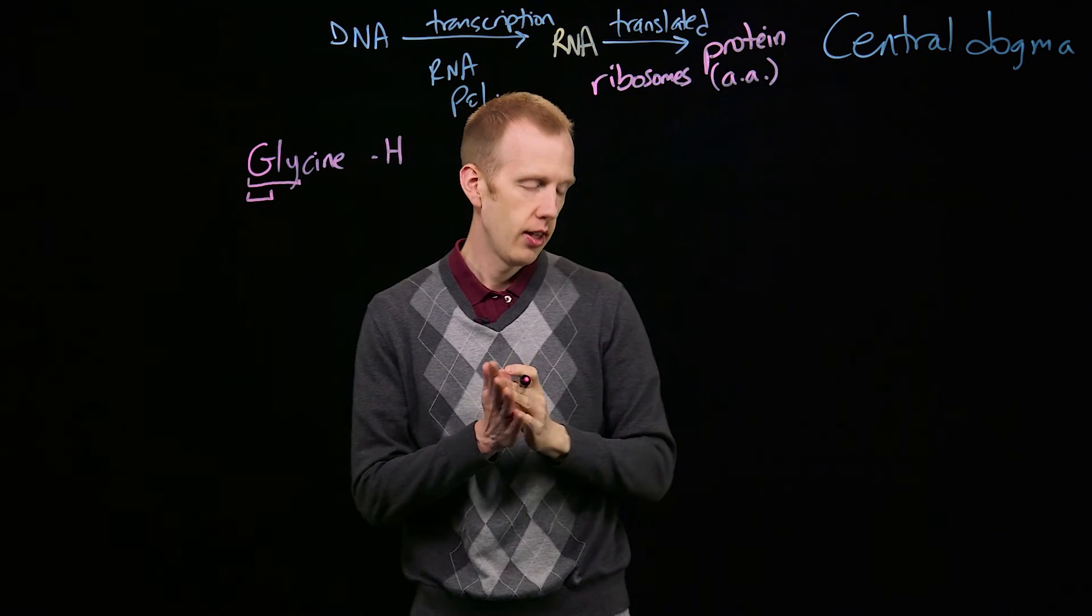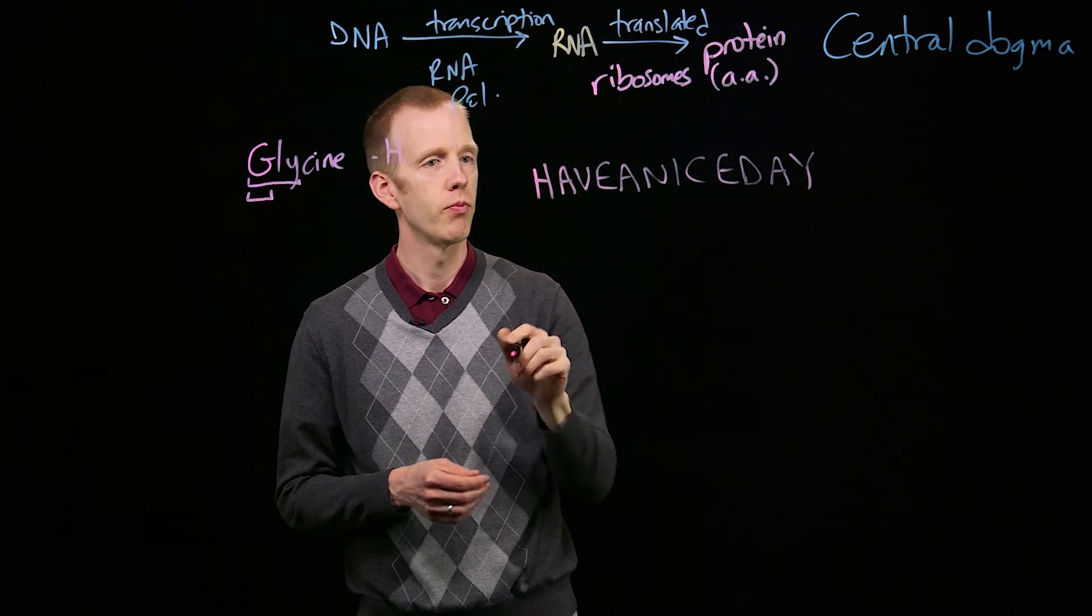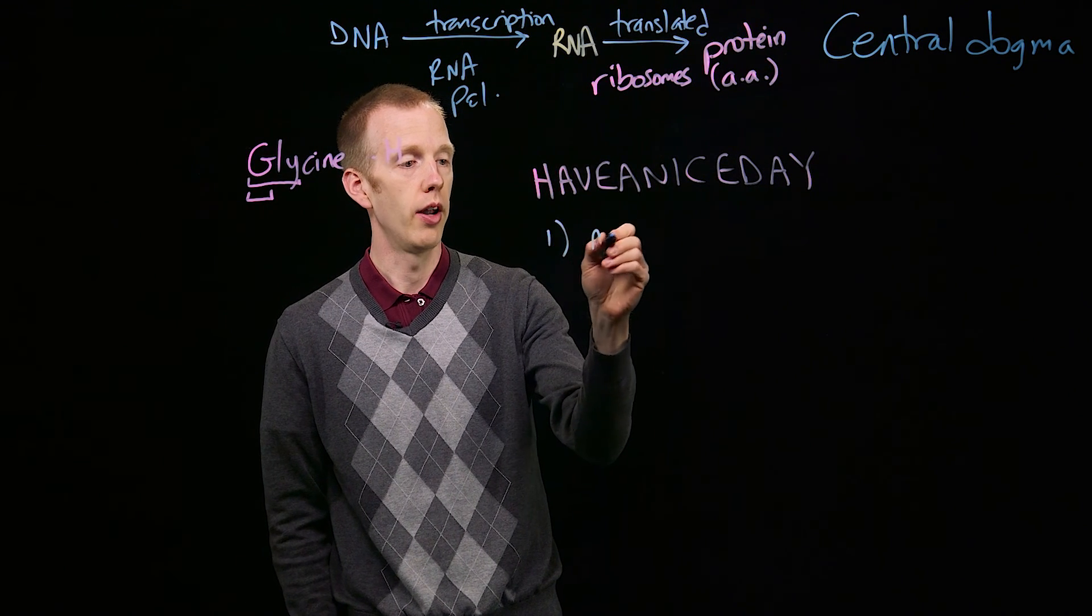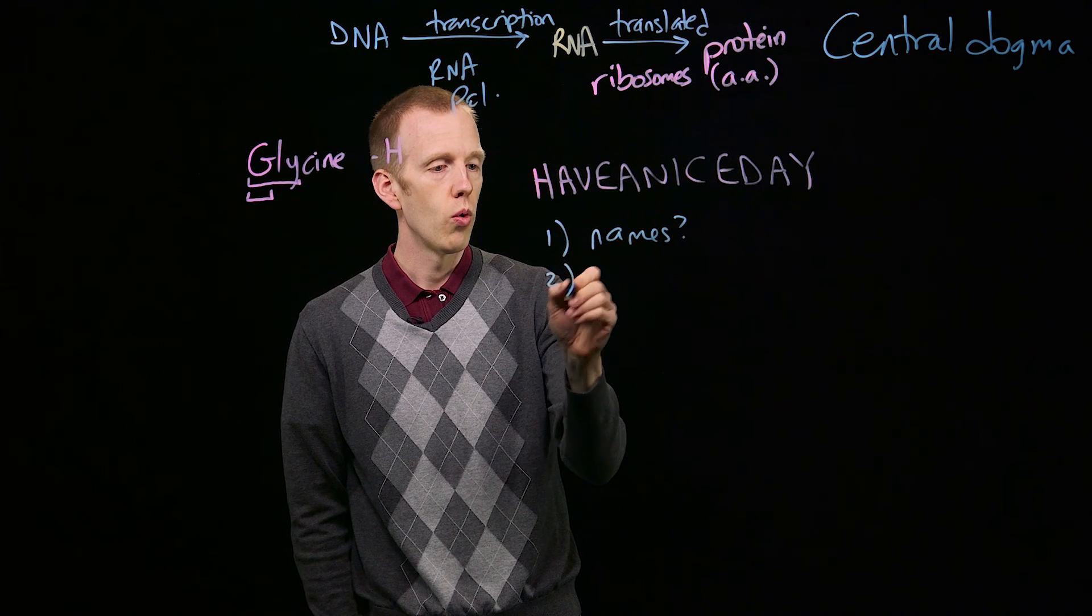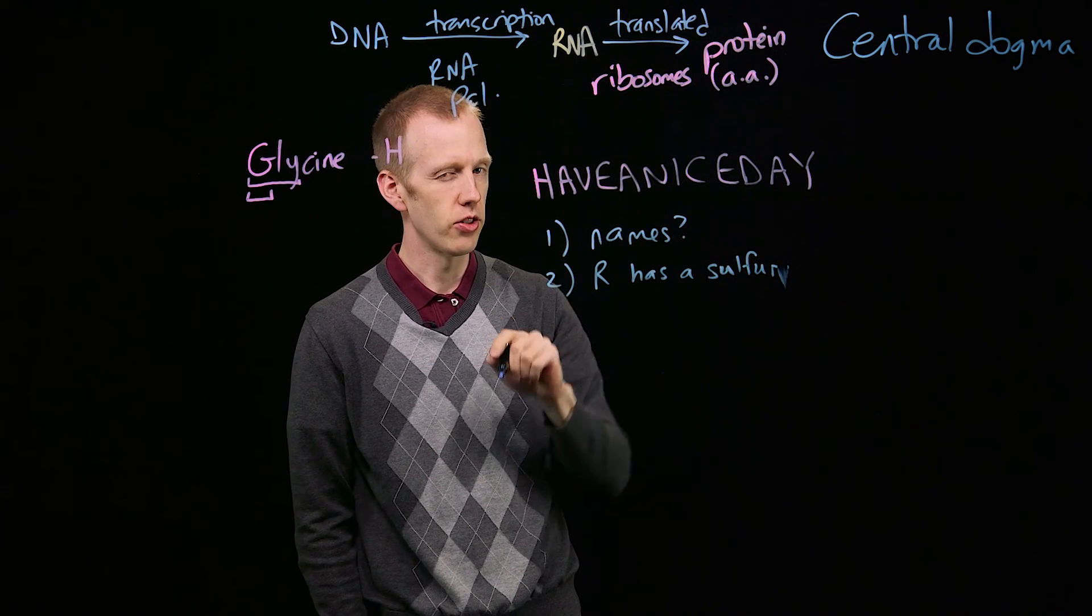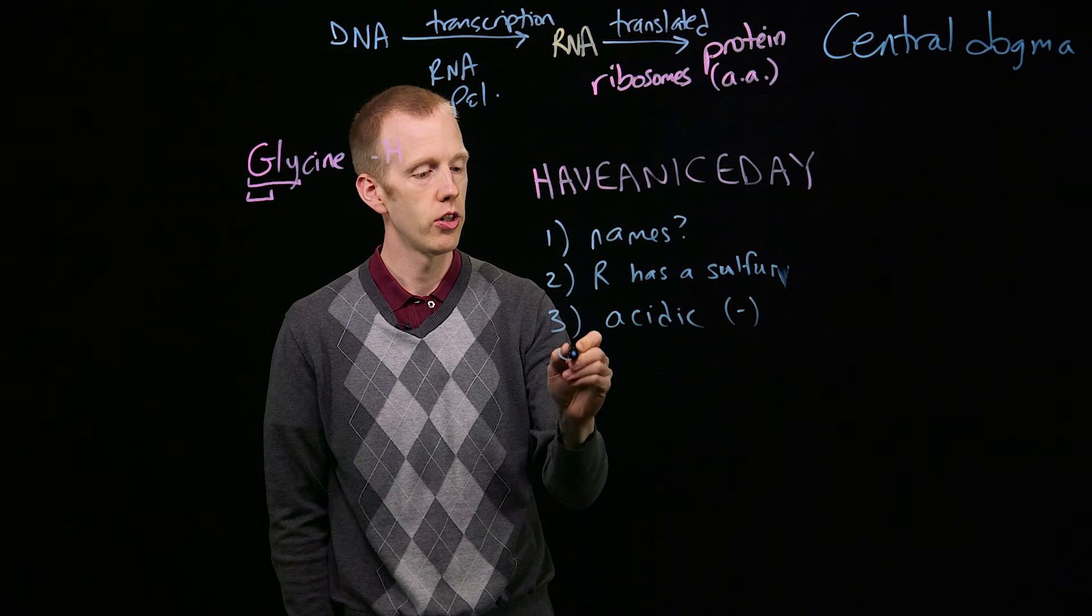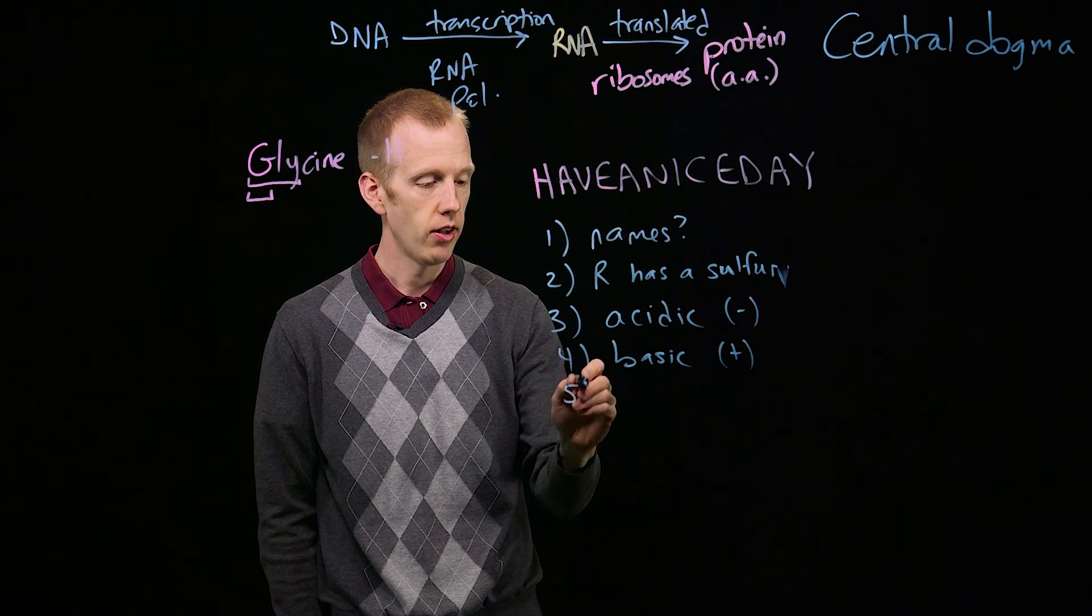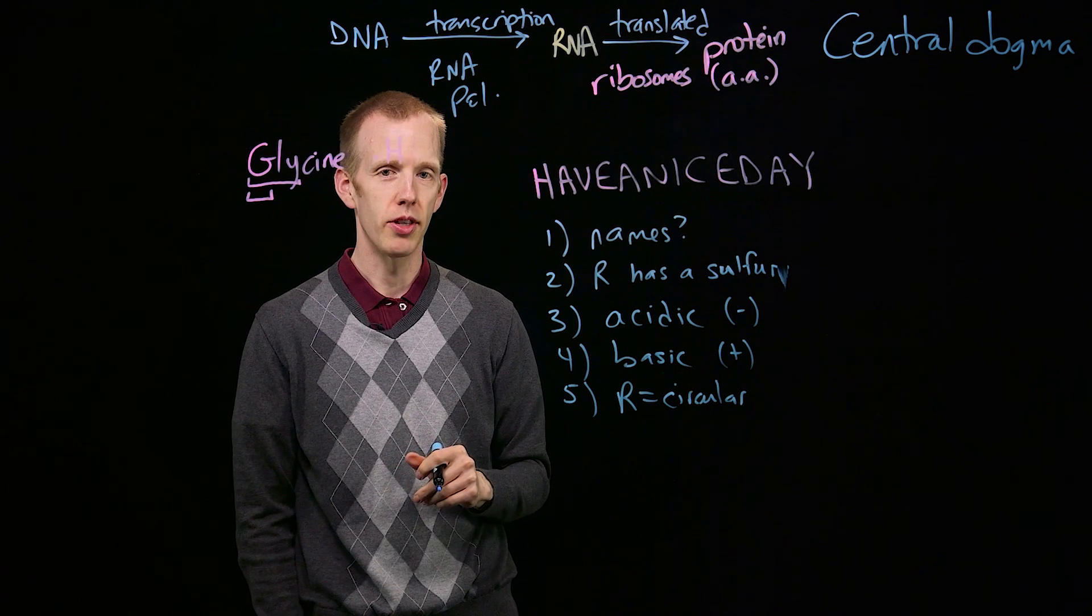And what I'd like you to do for class is to consider the peptide sequence that spells have a nice day. So each of these is a single-letter code for a different amino acid. And what I'd like to say is, which R group has a sulfur? So figure out which of these amino acids in Have a Nice Day has a sulfur atom in it. Third, which are acidic? That is, have a negative charge. Fourth, which are basic amino acids? That is, at a physiological pH, they have a positive charge. And last, which have R groups, or side chains, that are circular? So come to the next class with the answers to those questions.